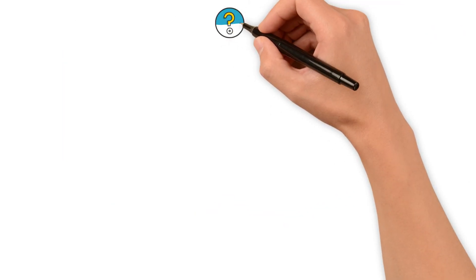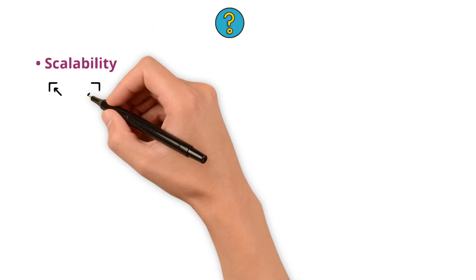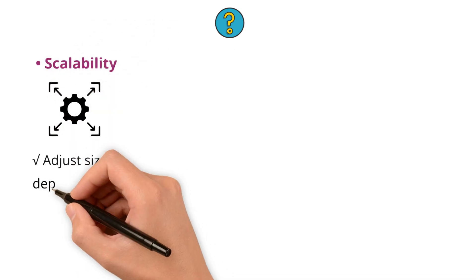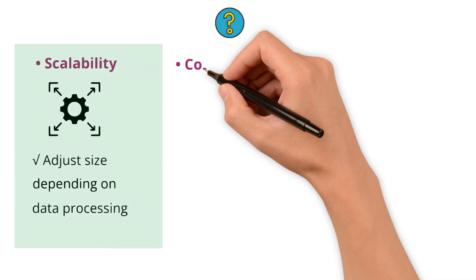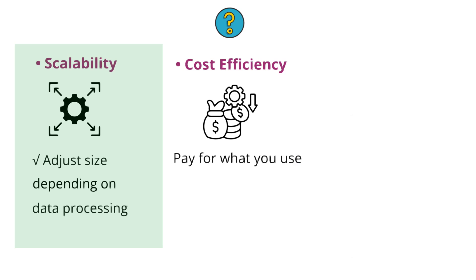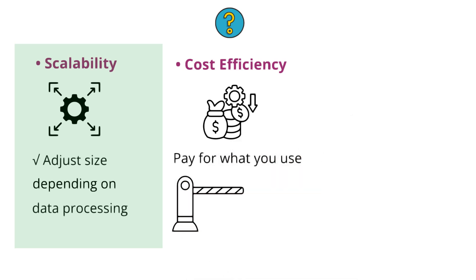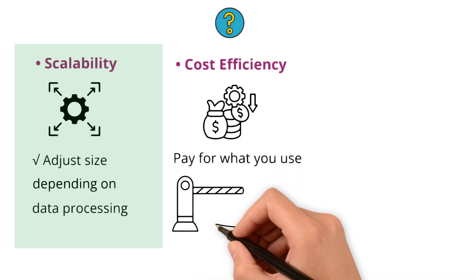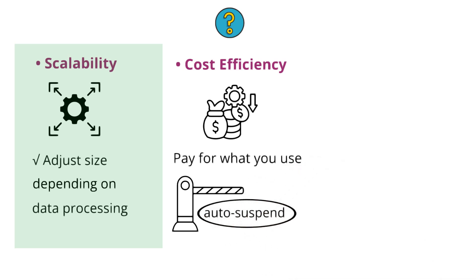So, what's special about the virtual warehouse? Scalability — you can adjust its size depending on how much data processing you need to do. Cost efficiency — you only pay when the virtual warehouse is in use, and it automatically stops when you're done to save costs. This automatic stop feature is called auto-suspend. We'll talk more about this term in a separate video.